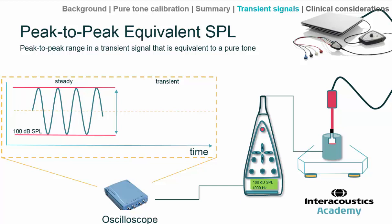That steady-state information from the pure tone, which can be both visualized on the oscilloscope and captured accurately by the sound level meter, can then be compared to a transient that can be captured electro-acoustically by the oscilloscope but not measured accurately by the sound level meter. For example, we might take a chirp, ignore any information on the screen of the sound level meter, look at the electro-acoustic transient on the oscilloscope, and increase the level until we match it to the peak-to-peak voltage of the known reference level — giving us a chirp calibrated to 100 dB peak-equivalent SPL.